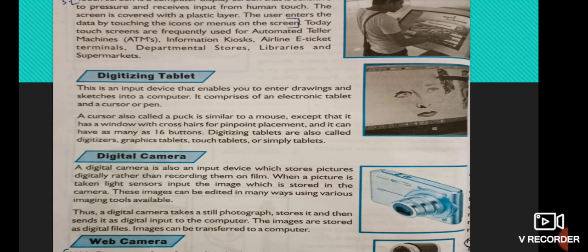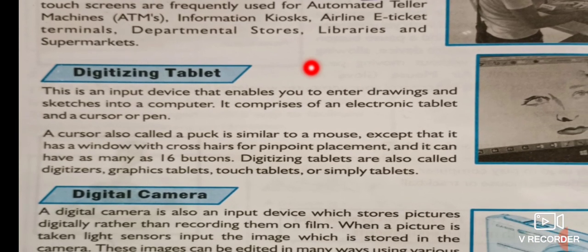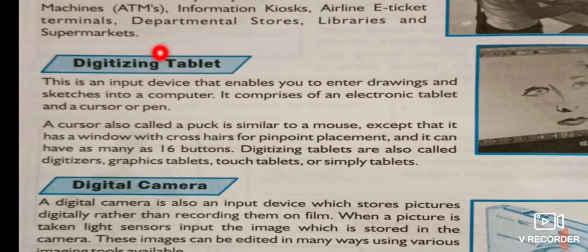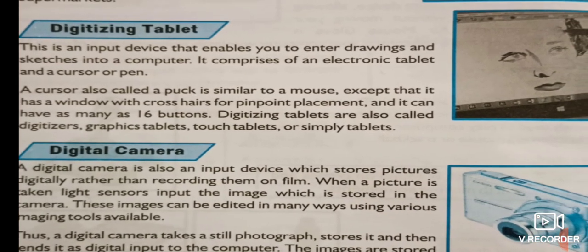Other examples of touch screen include the airline industry for e-tickets and booking tickets online, for traveling purposes in airline and railway industries. You can also see touch screens in departmental stores, libraries, and supermarkets. And mainly we are using touch screen mobiles, through which we select and send information to a particular device.